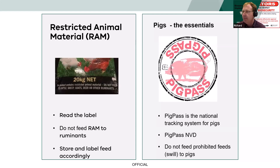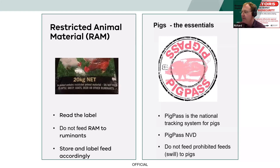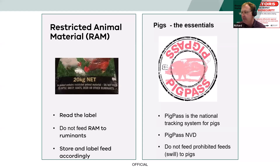If you do have pigs on the property, there is Pig Pass — the national tracking system for pigs, similar to the cattle or sheep NLS system, also run by Integrity Systems. And as mentioned before, do not feed prohibited feeds or swill to pigs.